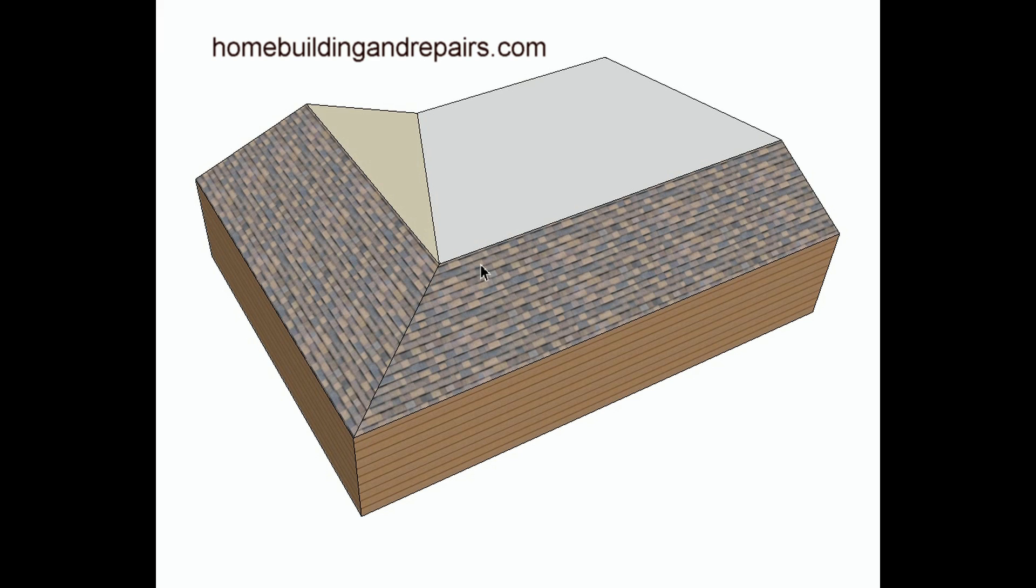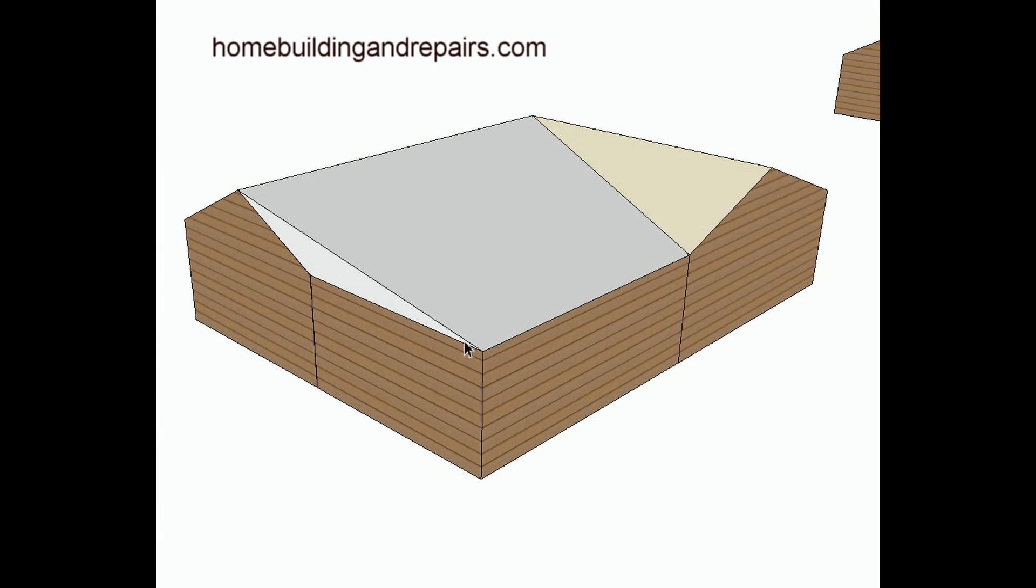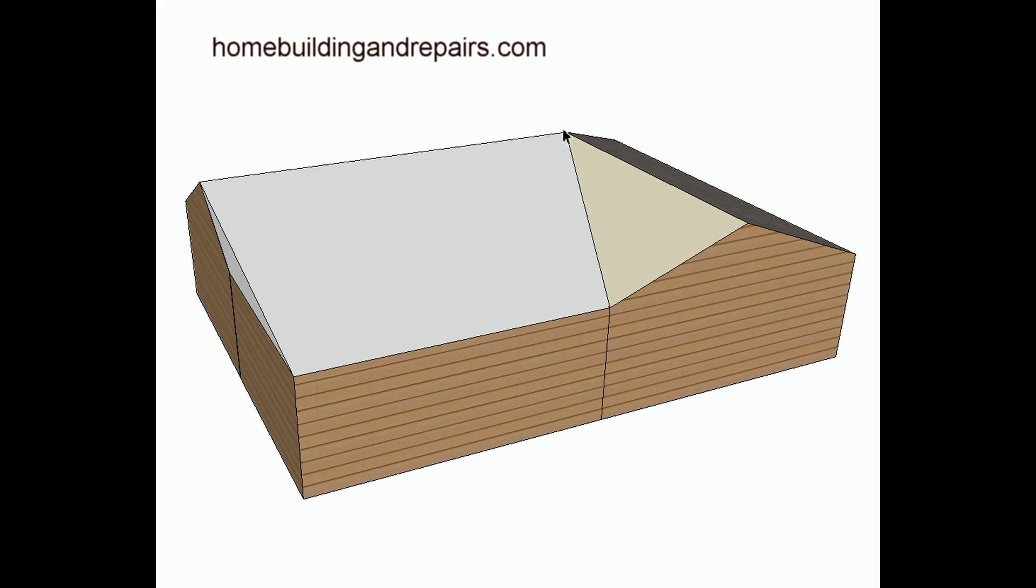Last but not least on our list, we would have a roof like this. This would simply just fill in the area here with a roof rafter that would come up to here. And again, this would probably be an inexpensive way to build a roof like this. And then of course you would have a valley down here.